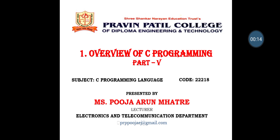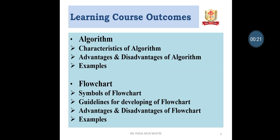Today's topic is C-Programming Language, Chapter No. 1, Overview of C-Programming, Part 5. The Learning Course Outcomes are: Algorithm, Characteristics of Algorithm, Advantages and Disadvantages of Algorithm and Examples of Algorithm, Flowchart, Symbols of Flowcharts, Guidelines for Developing Flowcharts, Advantages and Disadvantages of Flowchart and Examples.